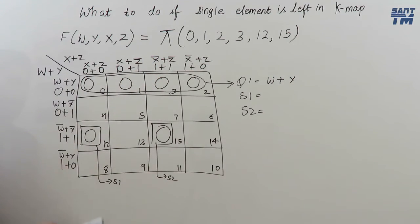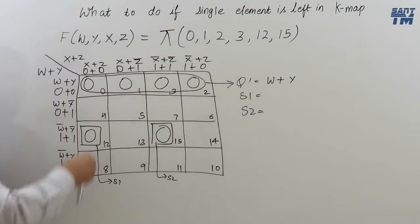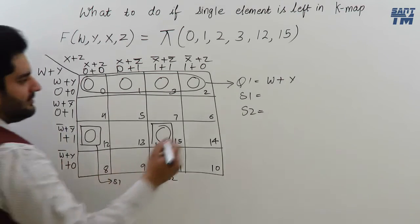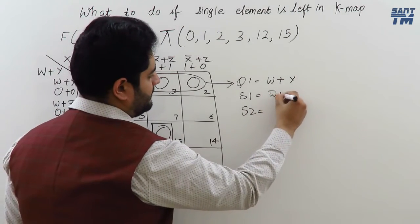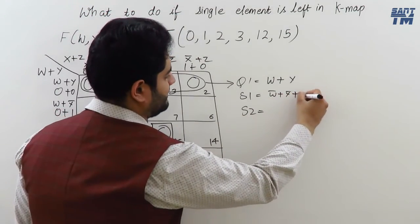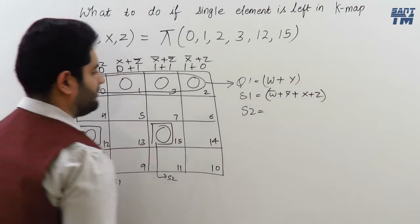In case of single 1, this single 1, X plus Z column is fully included. And, W bar plus Y bar row is also fully included. So, W bar plus Y bar is the row element. And, X plus Z is the column element. Plus X plus Z. This is the term for single 1.